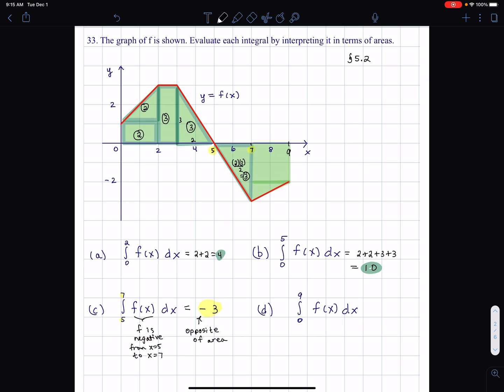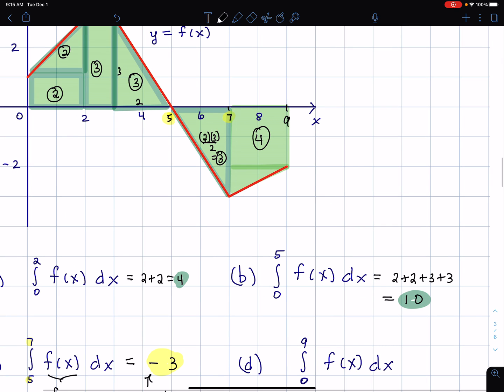You can see 2 times 2 is 4 is the area of that bit there. And then I have this triangle, which is half of a rectangle with area 2. So 2 times 1 is 2 divided by 2 is 1.